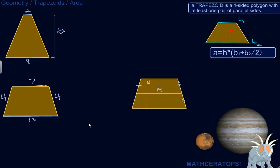Alright, let's work on calculating the area of a few trapezoids here. The formula for the area of a trapezoid is area equals height times base 1 plus base 2 over 2. Okay, but what does all that mean? Let's go back to the definition of a trapezoid. A trapezoid is a four-sided polygon with at least one pair of parallel sides.